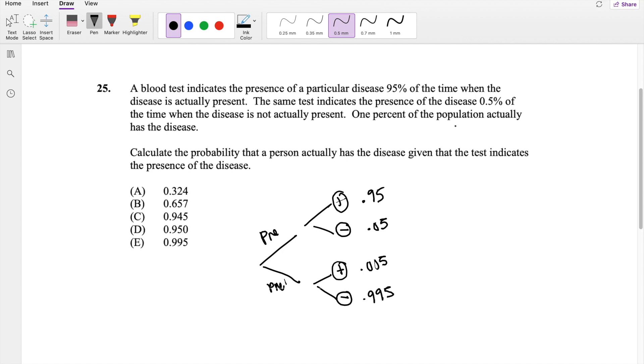And only 1% of the population actually has the disease. So the person that actually has the disease is 0.01. And you're asked to calculate the probability that the person actually has the disease, so present, given that the test is positive.